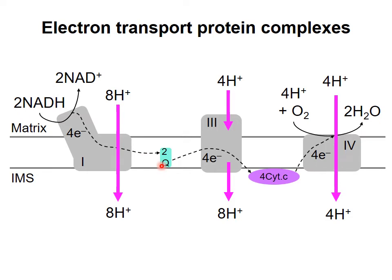During this process, complex 1 pumps some protons out of the matrix. The reduced coenzyme Q moves to complex 3, which accepts electrons and passes them to cytochrome C, which is a peripheral membrane protein associated with the inner mitochondrial membrane. Complex 3 also pumps some protons out of the matrix.